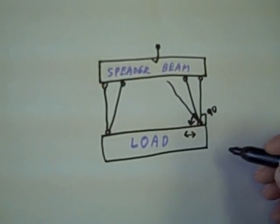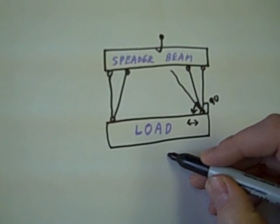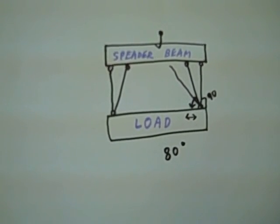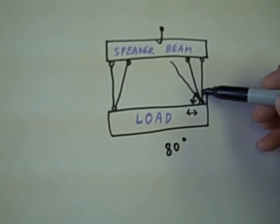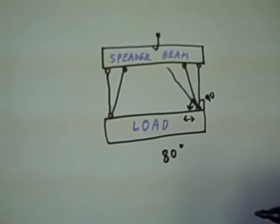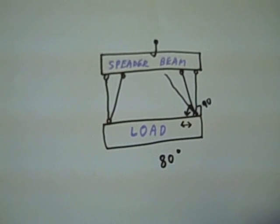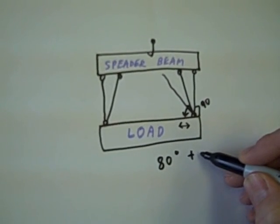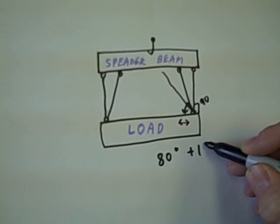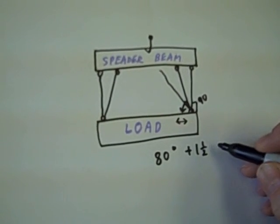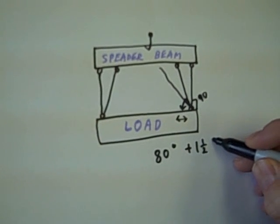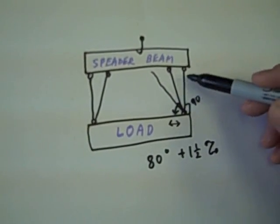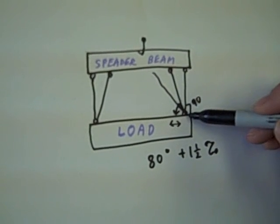So let's just take an example. Let's say this is at 80 degrees, this angle right here, which is really not too much. At that angle the horizontal forces will increase. It will add one and a half percent of the forces that it would normally have if it were just 90 degrees.